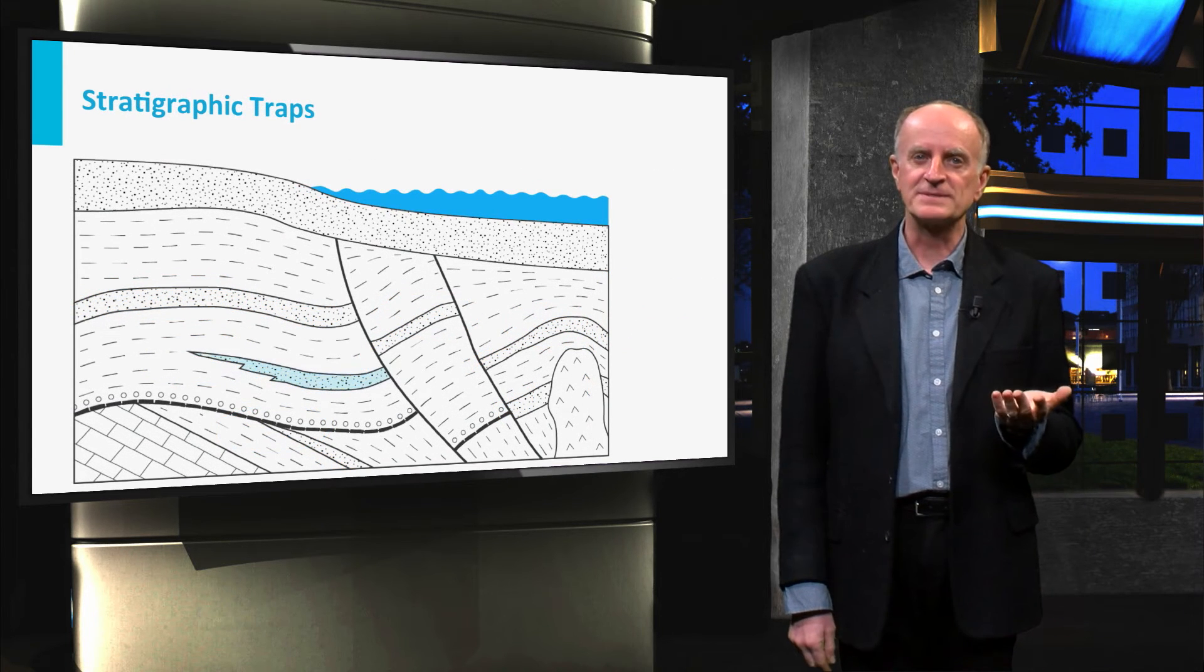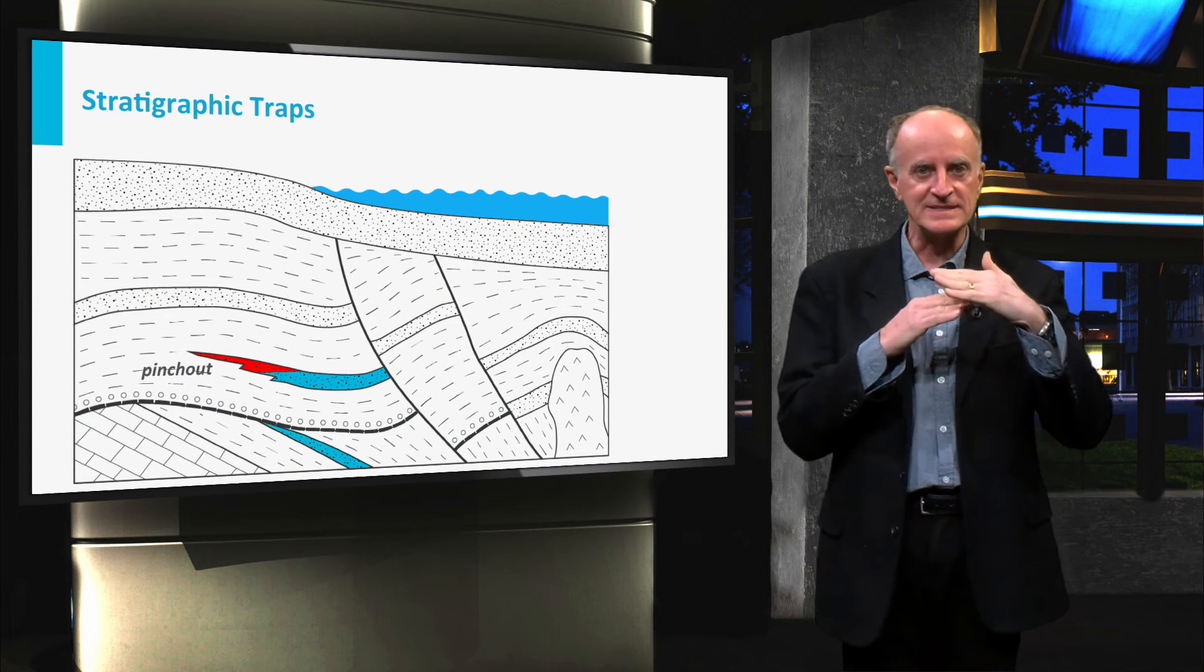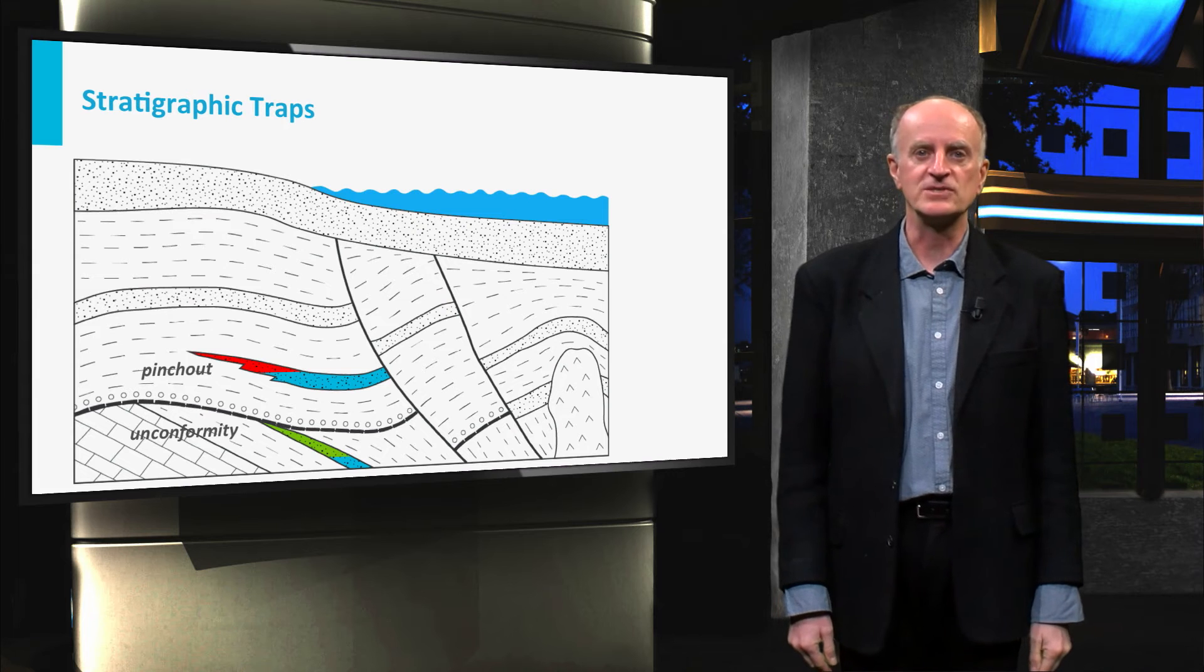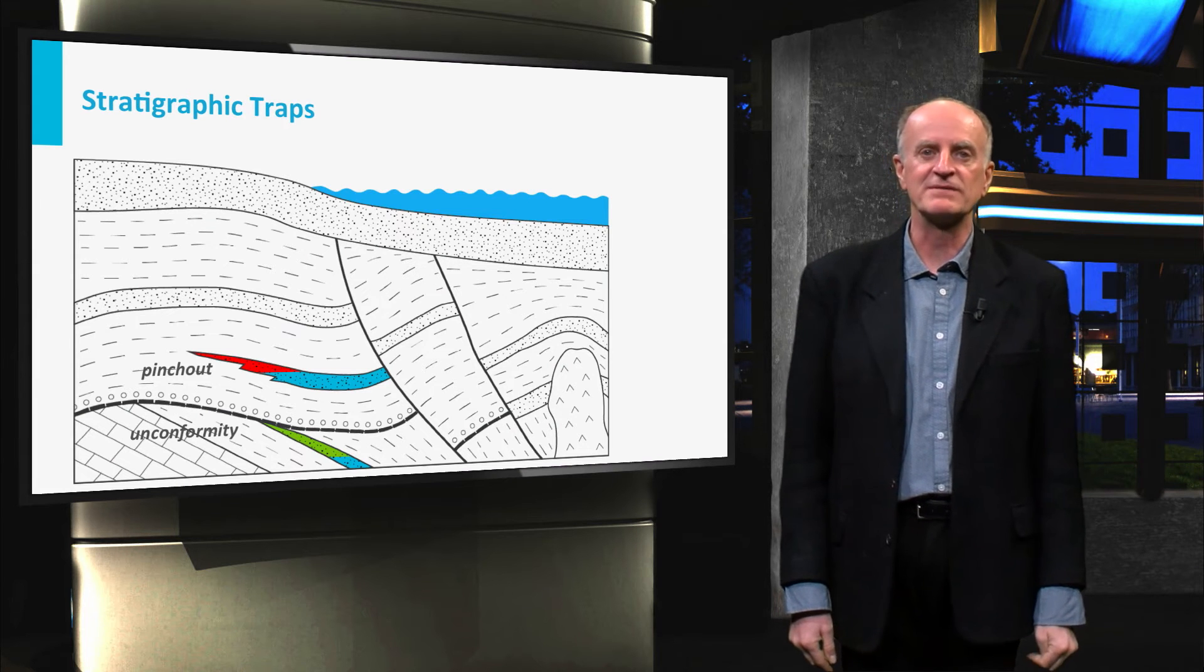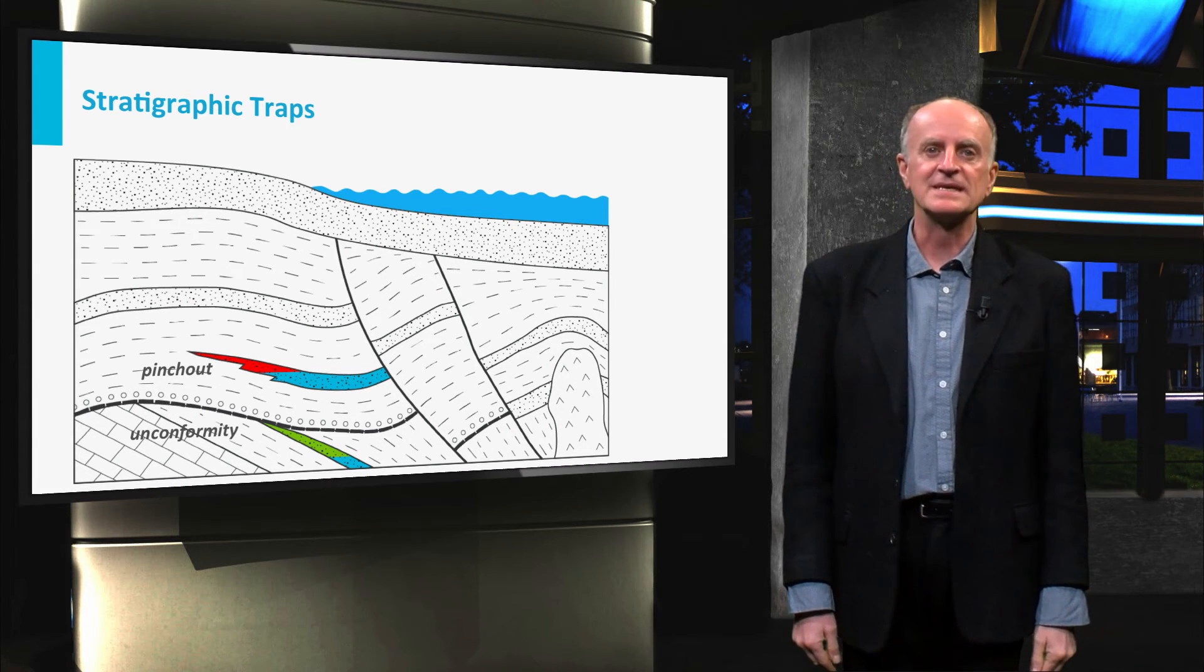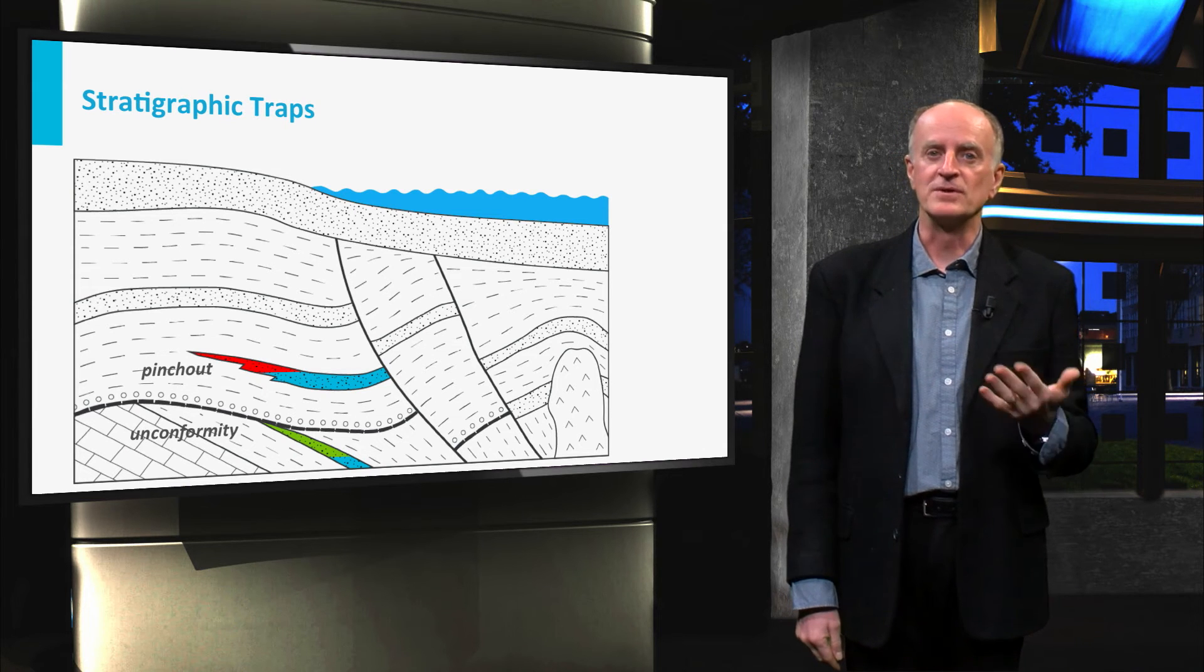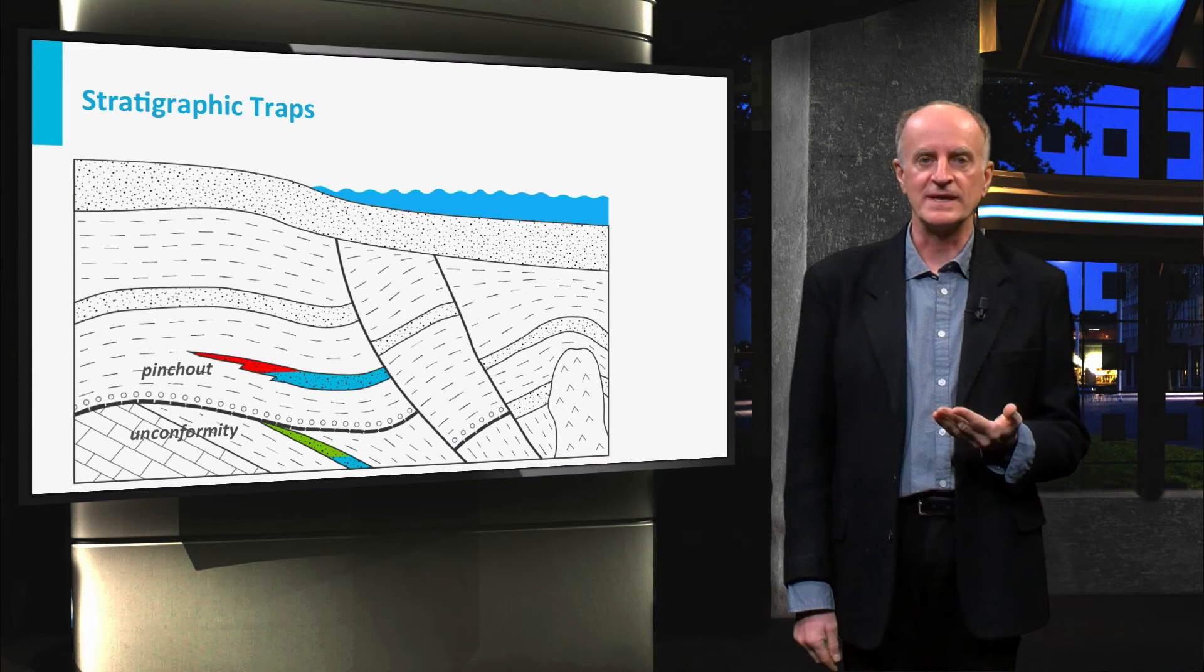In stratigraphic traps, the permeable layer terminates laterally against the impermeable rocks. This can occur for example in channelized sands deposited in river systems or in sands below unconformities. The age of these traps corresponds to that of the deposition of the impermeable layer.